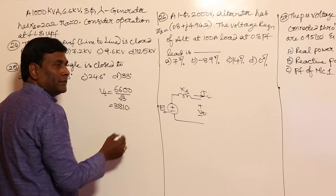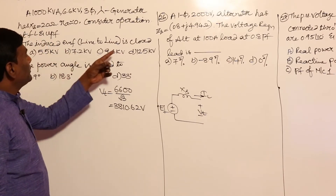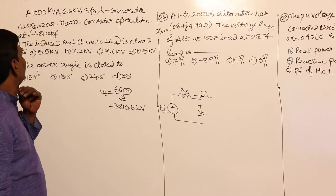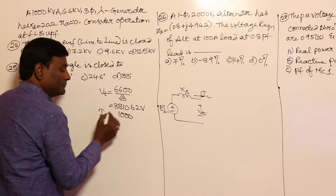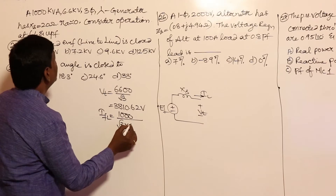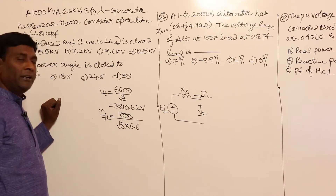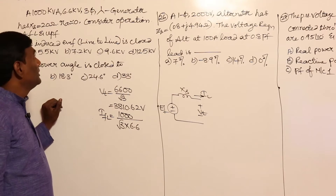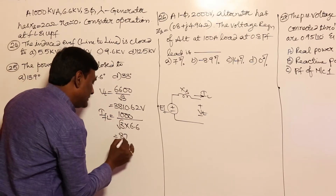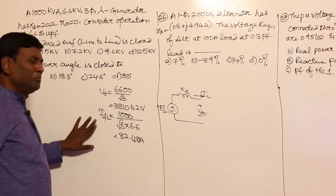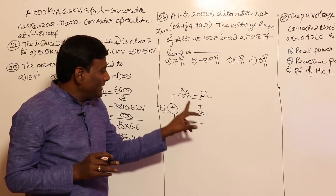Vt per phase comes to 3810.62 volts. Now, the induced EMF line-to-line — consider operation at full load, unity power factor. Full load current equals 1000 kVA divided by root 3 times 6.6 kV, which gives 87.48 amperes. Since it is star connected, line current equals phase current. We calculate Ef: Vt plus drop equals Ef.